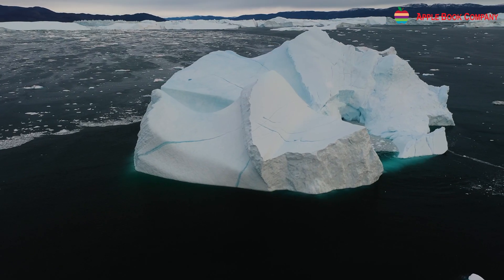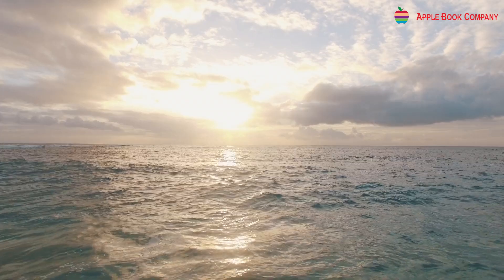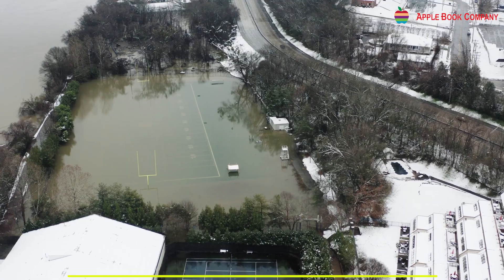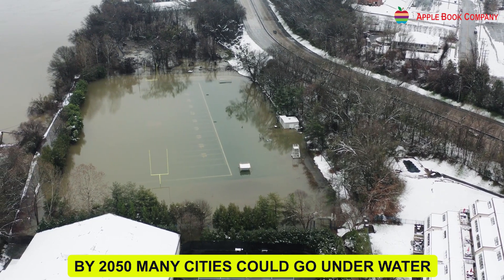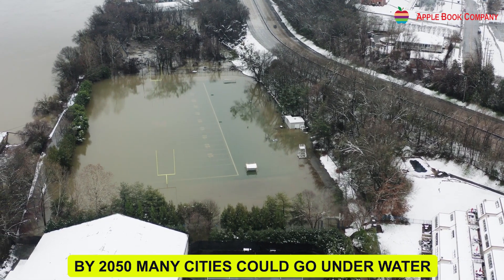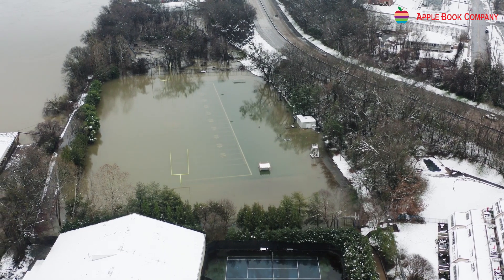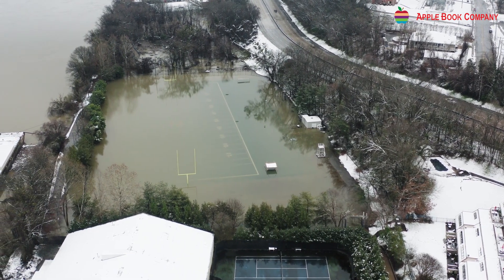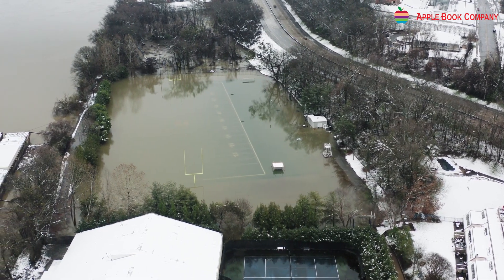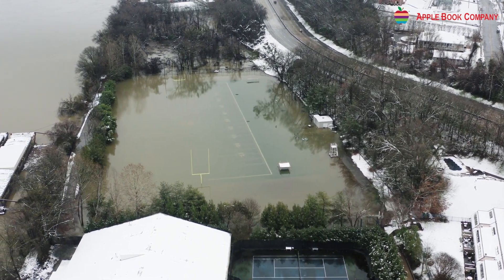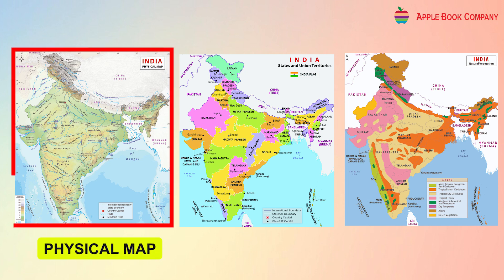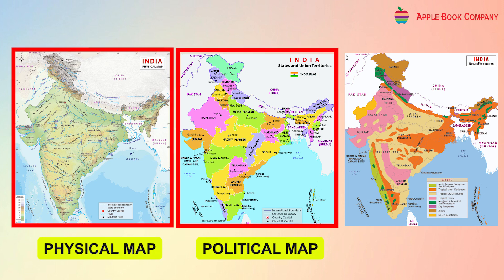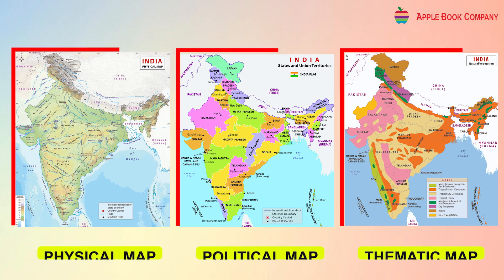Climate change and glacier melting cause sea levels to rise. By 2050, many cities could go underwater and will not appear on maps as part of the land. See the difference, children — a physical map, a political map, a thematic map.